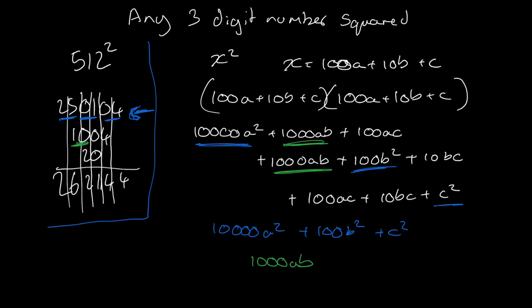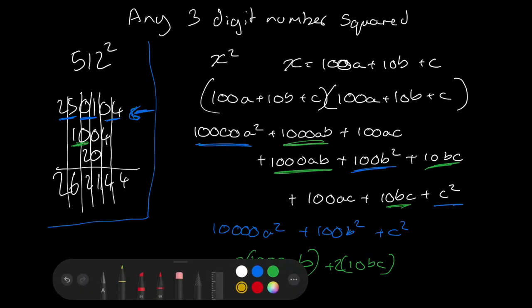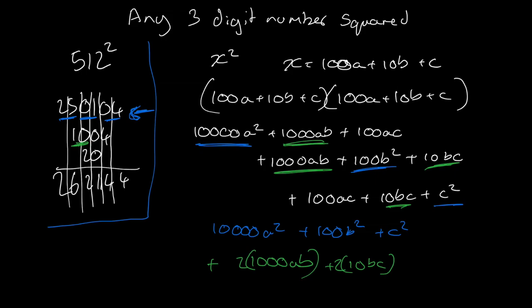And then also we have our bc term, which is 10bc and 10bc, which becomes 10bc. Now both of these should actually have a 2 in front of them because there's two of them up here. So that becomes our second line, plus in front of that. And what's left is this 100ac—two of them—so then we get our 2(100ac), which is actually our bottom one here.